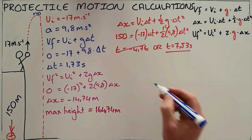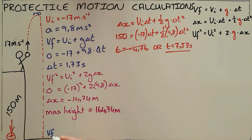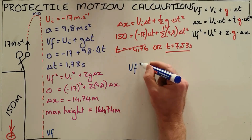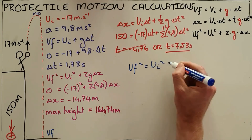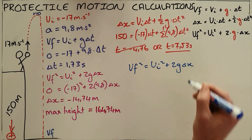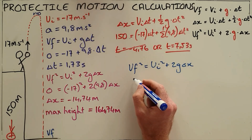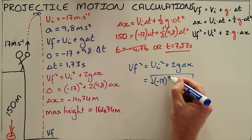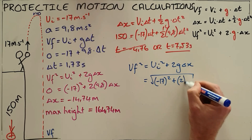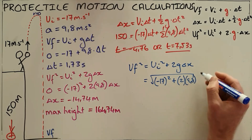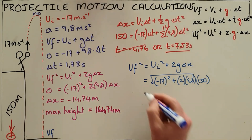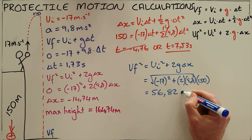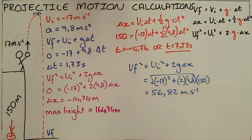To calculate the final velocity when the object hits the ground, we use: v² = u² + 2as. The initial velocity is −17 m/s, the displacement is 150 m downward (positive), and solving gives a positive final velocity of 56.82 m/s downward.